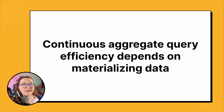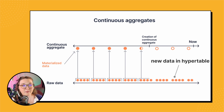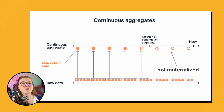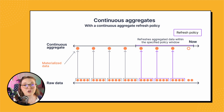We're also going to show you how to do a one-off manual refresh as well, in case you ever need to use it. We have lots to go over, so let's jump right on over to the desktop and get things started. Continuous aggregates are really effective because of how they materialize or store aggregated data. If you add new data to the underlying hyper table, this new data will not be materialized into the continuous aggregate on its own.